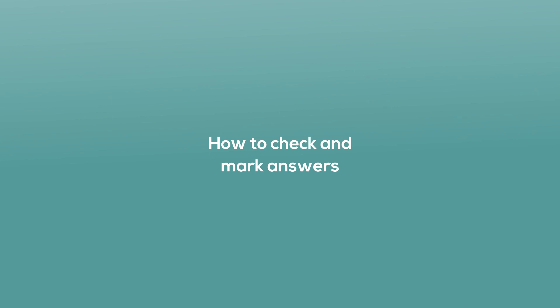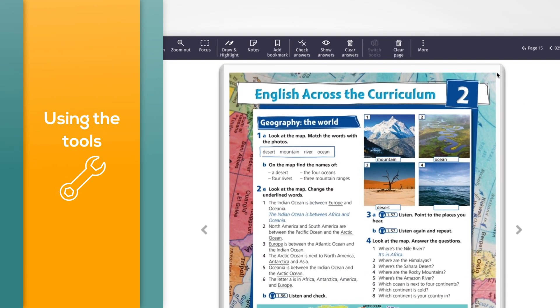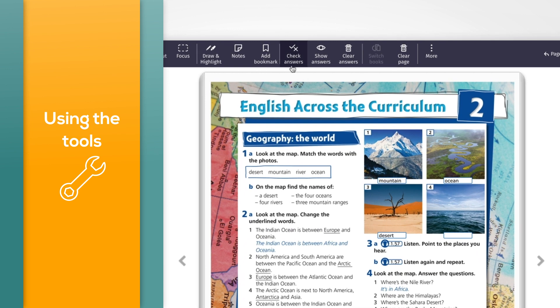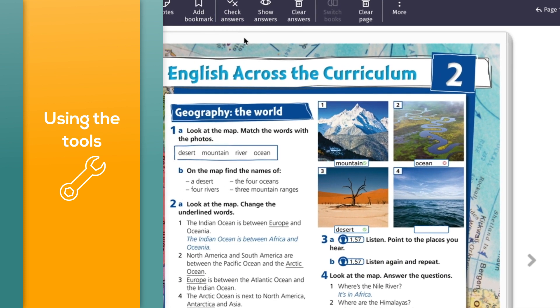How to check and mark answers. There are three marking options available in the toolbar: Check answers, Show answers, and Clear answers. Check and clear answers can only be used when an activity has been attempted. To mark your completed exercises, click the 'Check answers' button in the toolbar. Your answers will be marked with a tick or cross to confirm if they are correct or incorrect. You do not need to complete all exercises on a page to check answers.